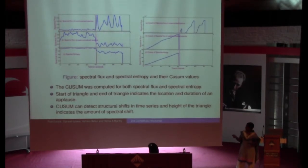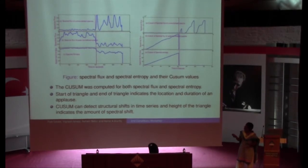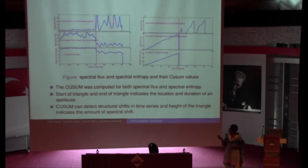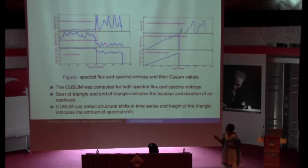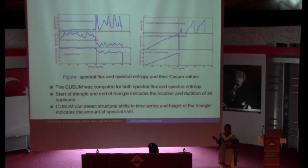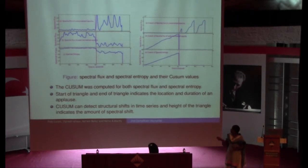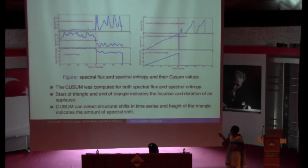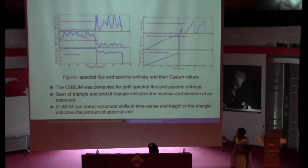Previously I showed three figures: spectral flux with no normalization, spectral flux with peak normalization, and spectral entropy. For these I am calculating the cumulative sum technique. The technique works as follows: there is a discrimination between music and applause. If I subtract the mean from the applause region it will never become negative, whereas for the music region it becomes negative. My implementation subtracts the mean from every sample — if the value is greater than zero I sum it up; if it is less than zero I make it zero. Wherever applause starts, a triangle begins; wherever it ends, the triangle ends. The start and end of a triangle indicate the applause location, duration, and strength.